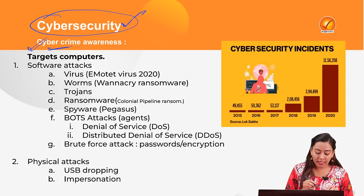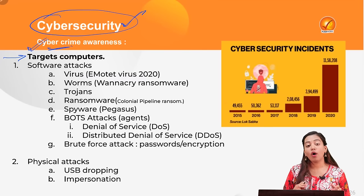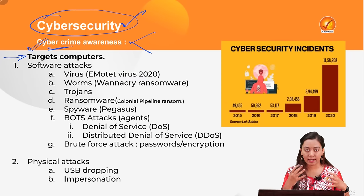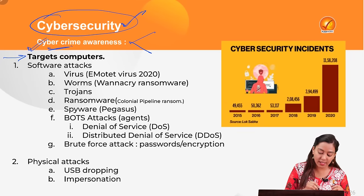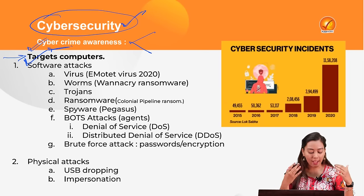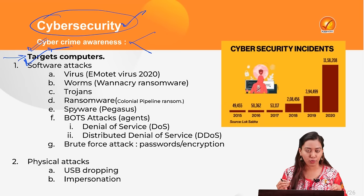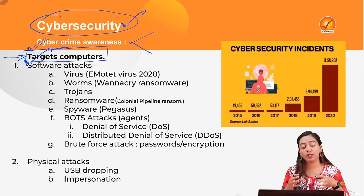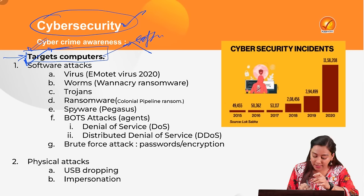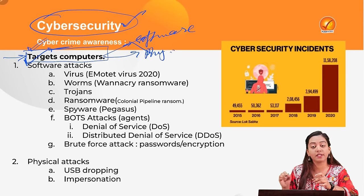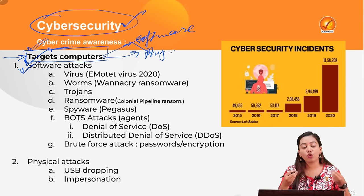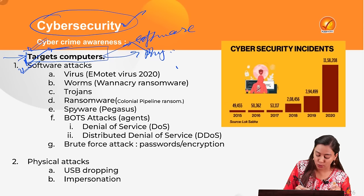If you broadly divide cyber crimes, they either target the computer or are targeted on computers. They don't work in silos — some target the computer and are also targeted by the computer. Broadly, cyber attacks targeting the computer are divided into two parts: those attacking the software, and those causing physical attacks to cyber systems. When it comes to software attack, software which intends to cause harm is known as malicious software, or malware.